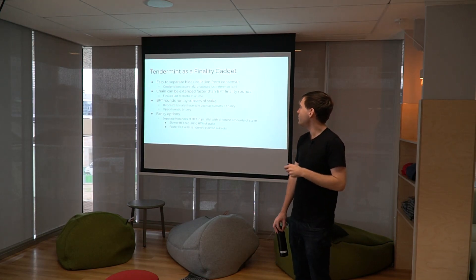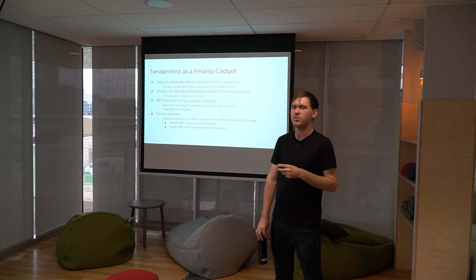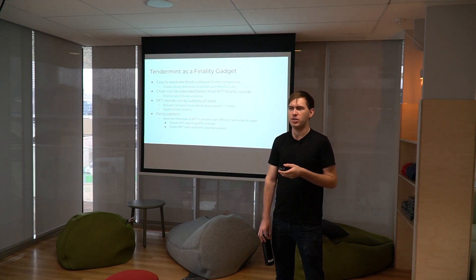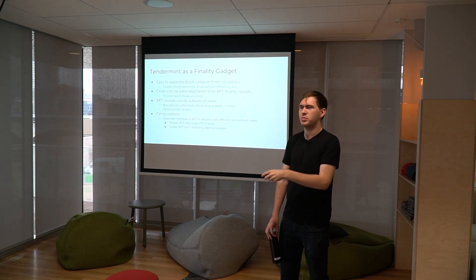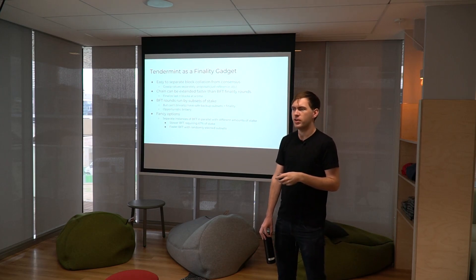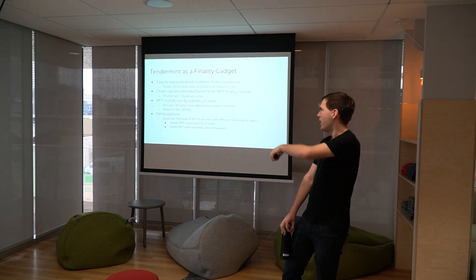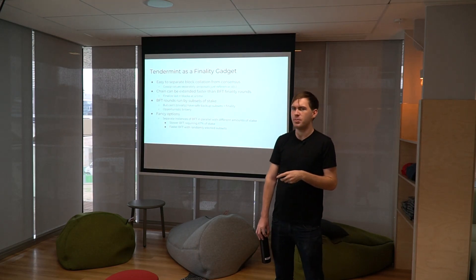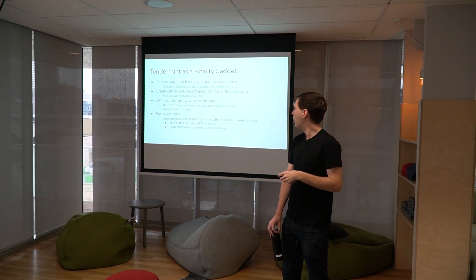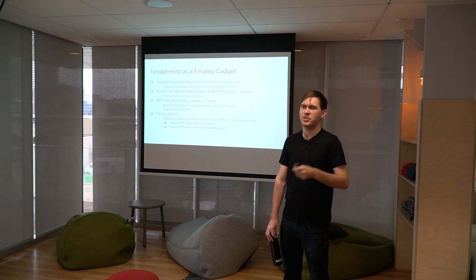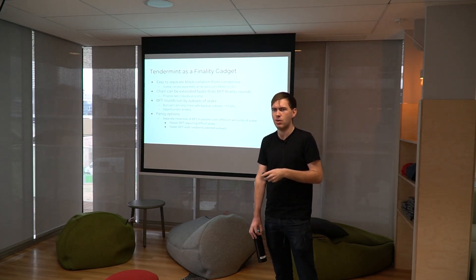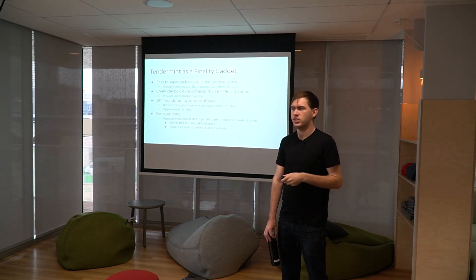You could also do fancier things with Tendermint as a finality gadget. There's nothing limiting you to running only one parameterized instance of BFT consensus. You could run fast instances with subsets of stake — say fifty or a few hundred voting nodes — which provide some degree of finality or at least stronger guarantees than just the block production rule. And then you could also run a slower BFT consensus round with actually 2F+1 of all the stake that maybe finishes every ten minutes, for anyone who wants to send a high-value transaction and really wants that strong finality.